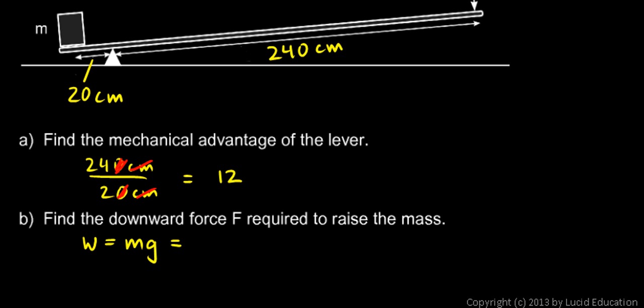We're told the mass is 75 kilograms, so its weight will be 75 kilograms times g, and g is 9.8 meters per second squared. You pull out the calculator: 75 times 9.8, and you get 735 kilogram meters per second squared, or 735 newtons.